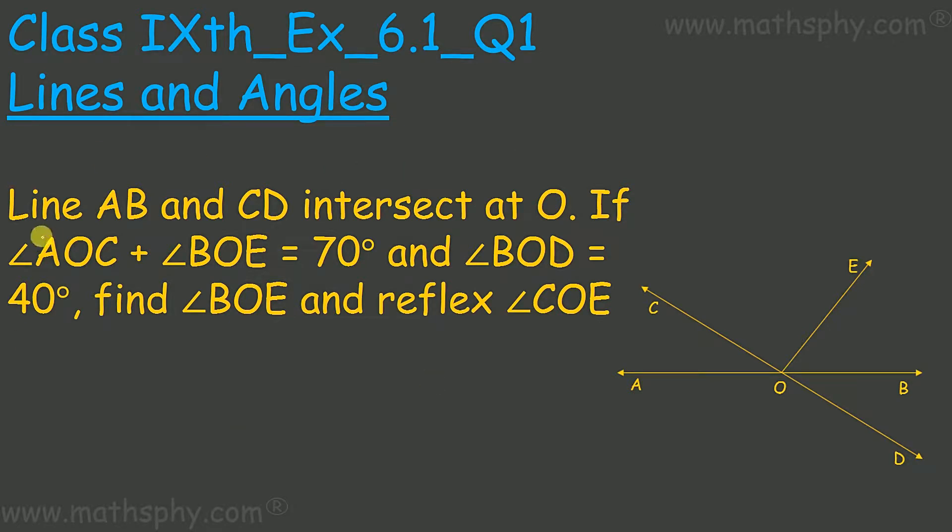This question says, if line AB and CD intersect at O, if angle AOC plus angle BOE equals 70 degrees and angle BOD is 40 degrees, find angle BOE and reflex of angle COE. We have to find the reflex of COE, not just COE.